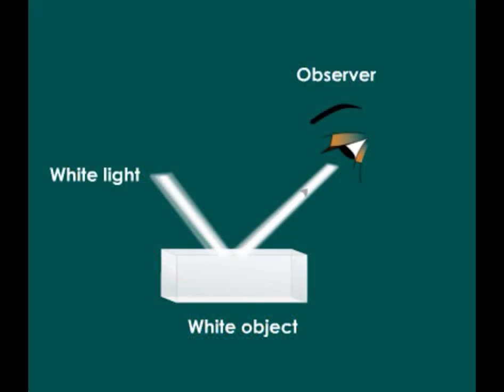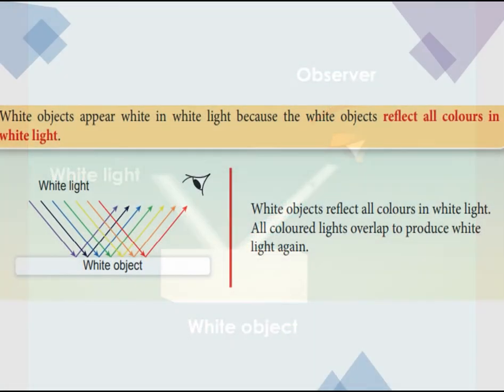What color do you see when a white object is illuminated by white light? The object will appear white when it is illuminated by white light. This is because white objects reflect all colors in white light, and all colored lights overlap to produce white light again.